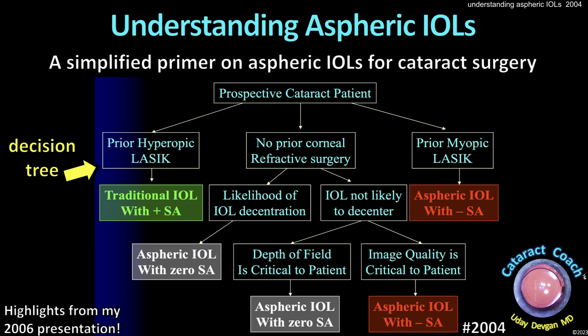CataractCoach.com. Aspheric IOLs — do you actually understand them? Let me give you a basic primer and the background about why we're using aspheric IOLs in cataract surgery and what the differences are. Do you want a negative aspherical lens, a positive aspherical lens, or a zero aspherical lens? Why would you choose one over the other? This is an old lecture I first gave in 2006. I found the PowerPoint slides and recorded a voiceover so you can understand this very important topic.